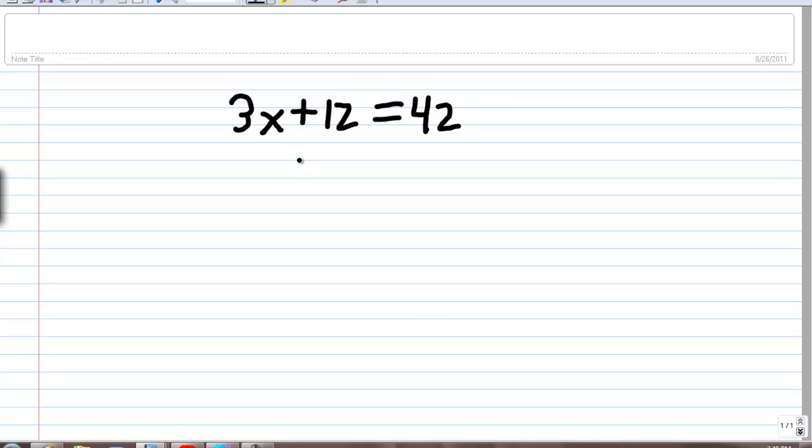Going in that order, first we want to subtract 12 from both sides. So we do minus 12, minus 12, and what we end up with is 3x is equal to 30.